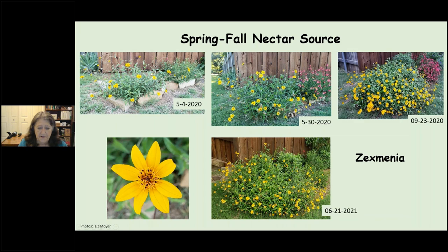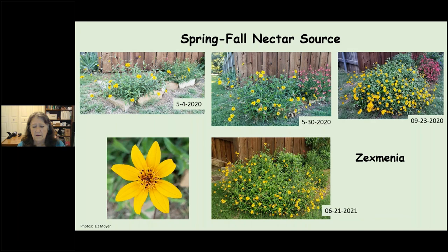Zexmenia (Wedelia texana) just hit the landscape market about three years ago. It looks modest in early May, better by late May, and by fall it's a fantastic pollinator plant covered in blooms. This exact same plant came back strong after the freeze and was already blooming seriously by June. I highly recommend Zexmenia — look for it at the garden centers on your resource list.